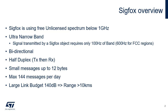Its main characteristics are bi-directional, half-duplex, TX then RX. It can deliver small messages up to 12 bytes, with a maximum of 144 messages per day. With a large link budget of 140 dB, the achievable range is over 10 km.